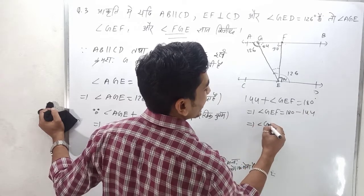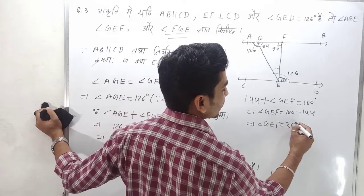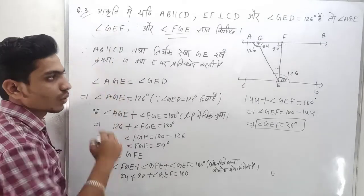180 minus 144 equals 36 degrees. So angle ZEF is 36 degrees. This completes your third question.